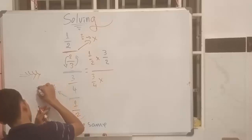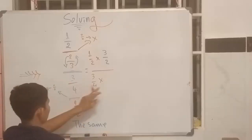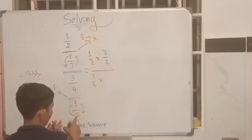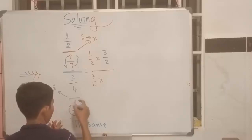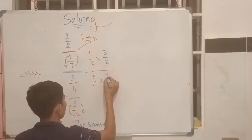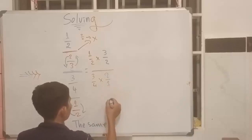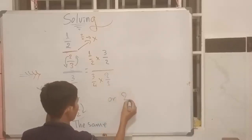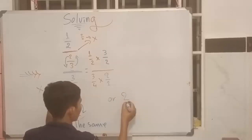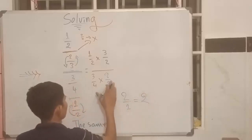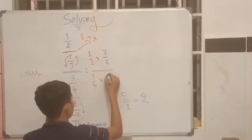Generally we write only two. Here, one divide by two — we move one down and two up. Okay, so with this mixed number — our one equals two — because generally we write only two.